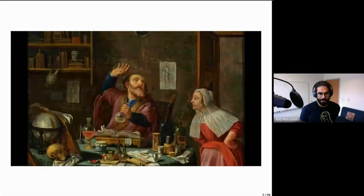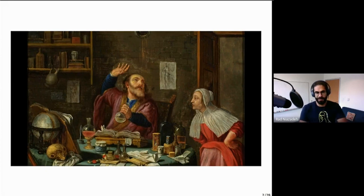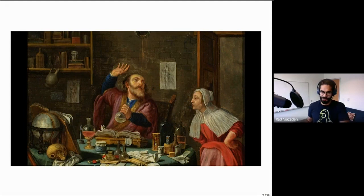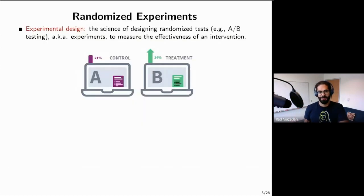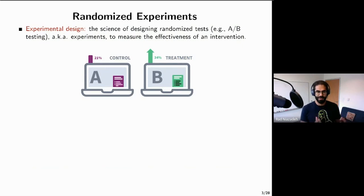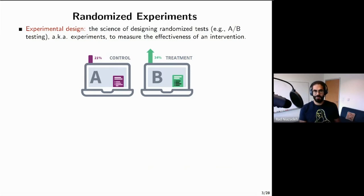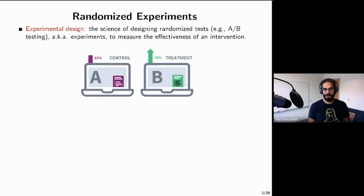I'm going to talk about experiments. Running experiments essentially is one of the most ancient scientific methods throughout history, used in order to gather more information about unknown phenomena. This very same basic concept has found a different meaning in our modern times and has been metamorphosized into a very exciting and impactful area called experimental design. Experimental design is basically the science of designing randomized tests—for example, A-B testing—to essentially measure the effectiveness of an intervention.